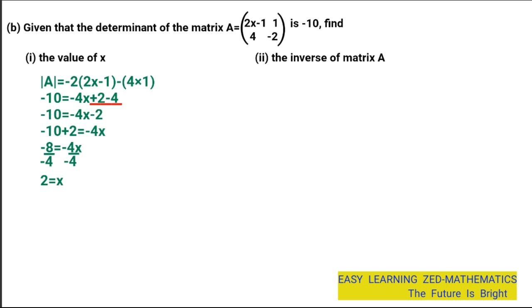Now find the inverse of matrix A. First, substitute x equals 2 into the matrix to get the actual matrix A. Where there is x, replace with 2: so 2 times 2 gives 4, and 4 minus 1 gives 3. The actual matrix A now has elements 3, 1, 4, negative 2.